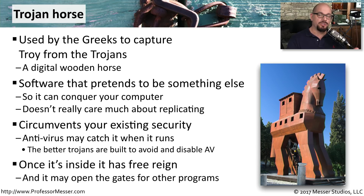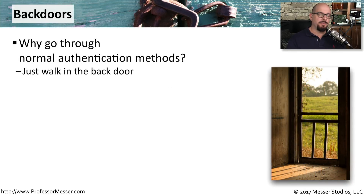Once this Trojan horse software gets inside of your computer, it has as much access to your system as you do. This is a very easy way for malware to find its way inside of your computer with as little effort as possible. Getting into your computer is simply the first step. At that point, the malware needs to open a door so that other software can come onto your computer, and that open door is the back door to your operating system.